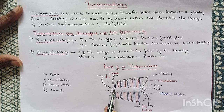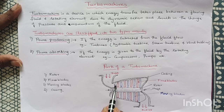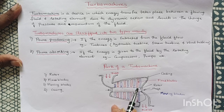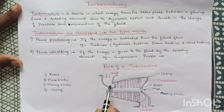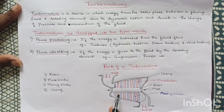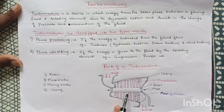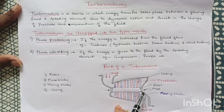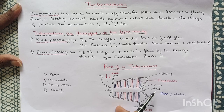The function of the moving blades is to extract energy from the steam and convert it into mechanical energy to drive the rotor or rotary drum. As the moving blades rotate, the drum also rotates. As the drum rotates, the shaft rotates, and this shaft is coupled to the generator where electricity is produced.